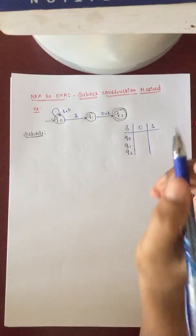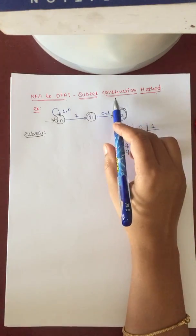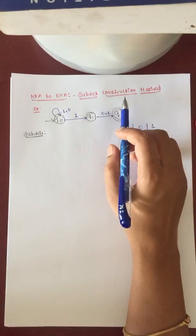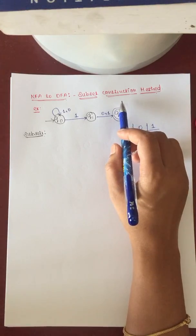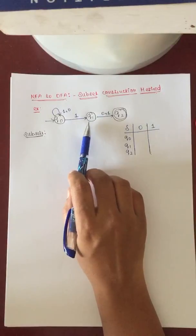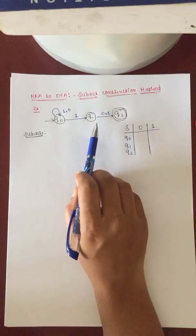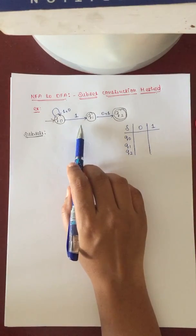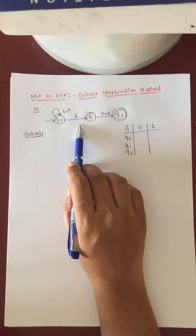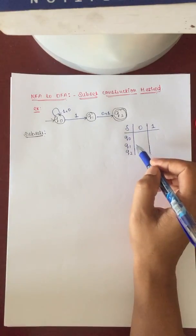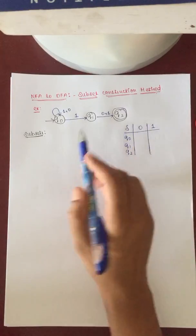To convert NFA to DFA there are two different methods: one is the subset construction method, another one is the lazy evaluation method. In this video I am going to explain only the subset construction method. This is the given example NFA diagram — I am going to convert this NFA diagram to the DFA diagram, making an equivalent DFA diagram. I am going to make a transition table for this diagram.